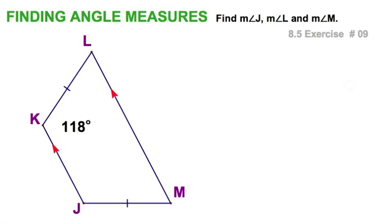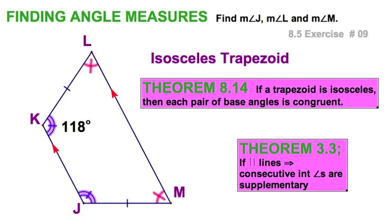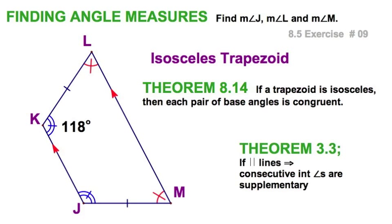This figure, same as the last one, is an isosceles trapezoid — there's the trapezoid part, and here's the isosceles, the two congruent legs. Just like last time, I've got two theorems, so I've got those congruent angles. Let's just put this 118 in there.